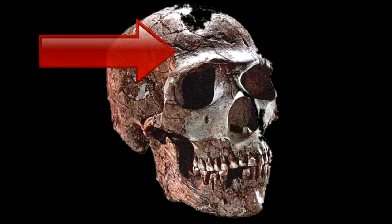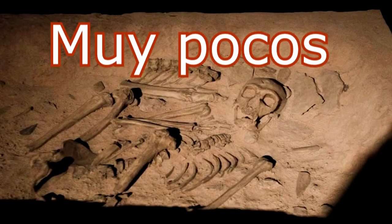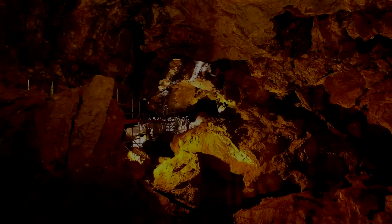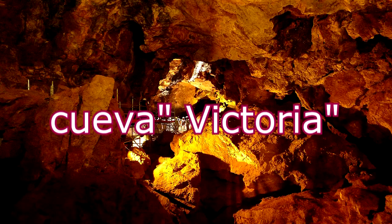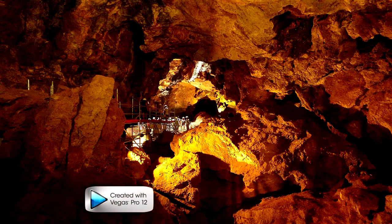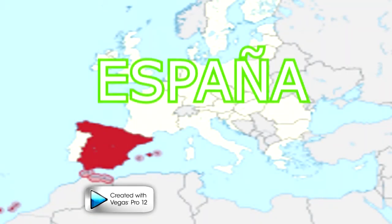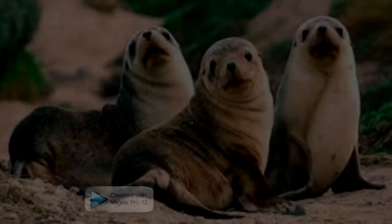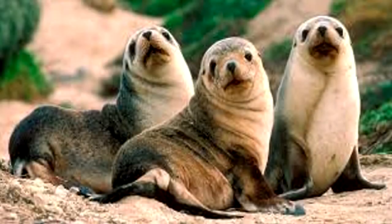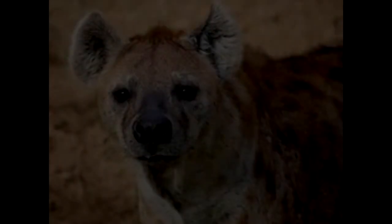Su frente era baja. Existen escasos restos del Paleolítico Inferior, pero el yacimiento más destacado es el de la Cueva Victoria, que se encuentra ubicada en Murcia, España. En esta cueva se han encontrado restos de animales como focas, hipopótamos y hienas.